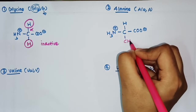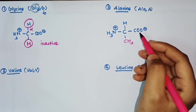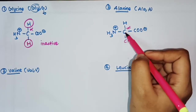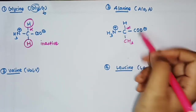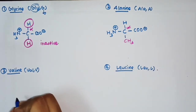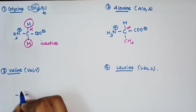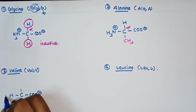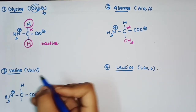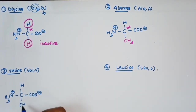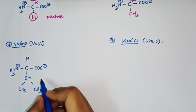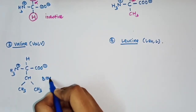In alanine the R group is CH₃. Alanine is optically active because there is a chiral center present — the alpha carbon is bonded to four different groups. The next amino acid, valine, has an R group of CH(CH₃)₂, so it is a branched-chain amino acid.